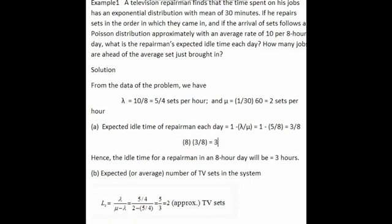A television repairman finds that the time spent on his jobs has an exponential distribution with a mean of 30 minutes. If he repairs TV sets in the order in which they came in, and if the arrival of sets follows a Poisson distribution approximately with an average rate of 10 per 8-hour day. What is the repairman's expected idle time each day? How many jobs are ahead of the average TV set just brought in?